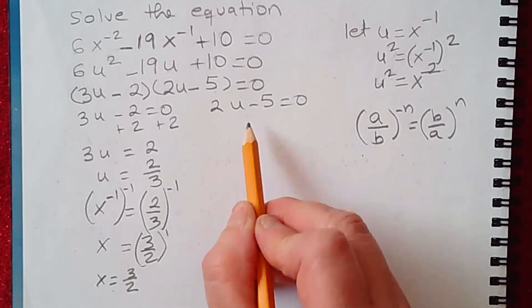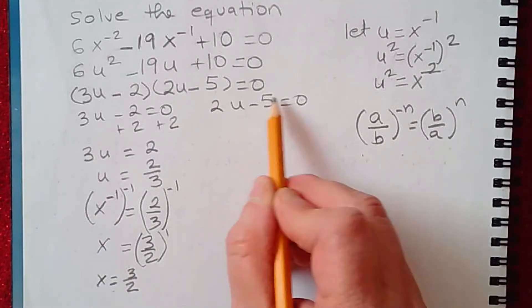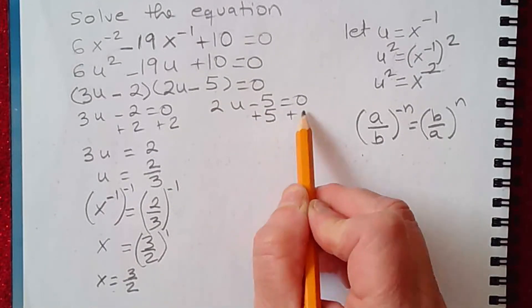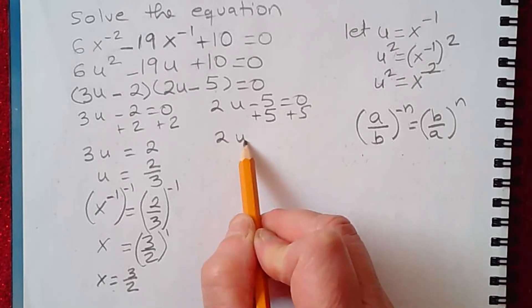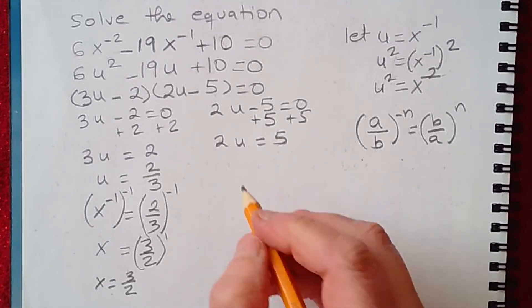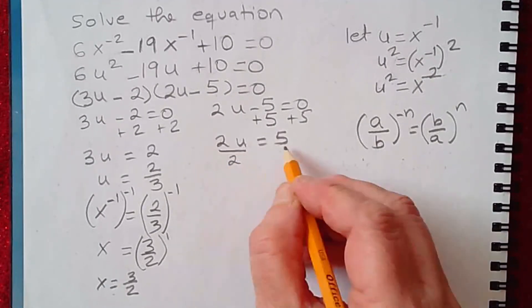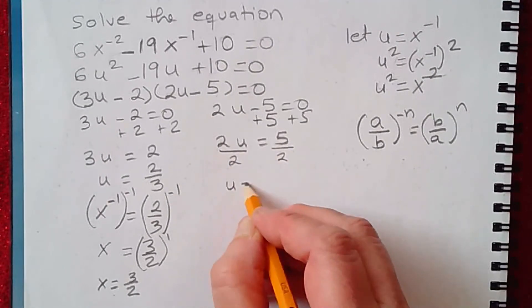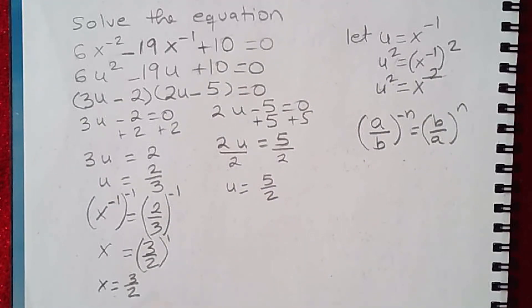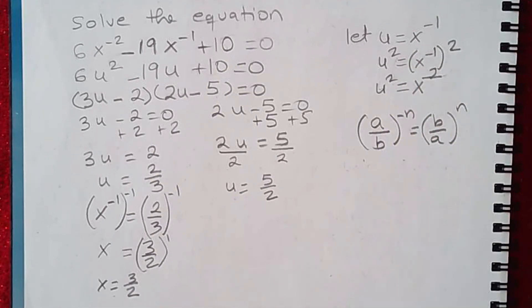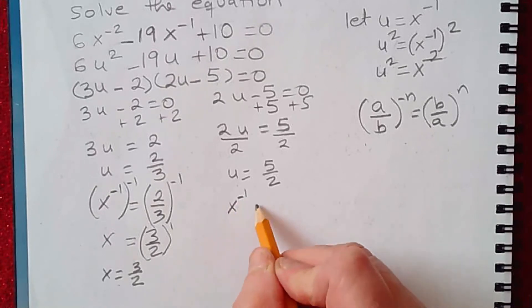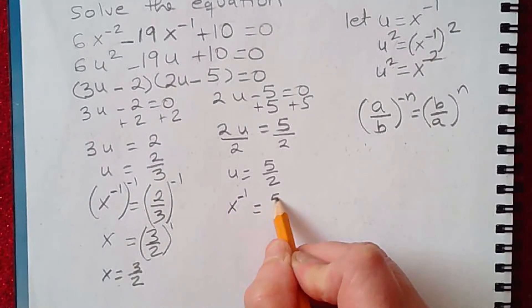Continuing this problem, I need to solve on this side. So we add 5 on both sides, you get 2u equals 5. And then you divide by 2 on both sides, u equals 5/2. Again, this is a solution for u. I need to go back to my original variable, which is x to the negative 1, and that will give me 5/2 here.